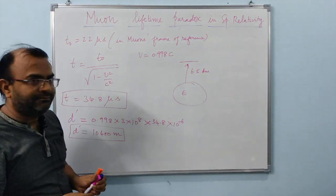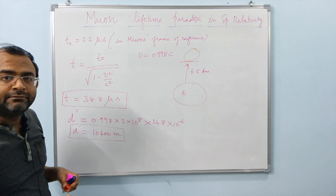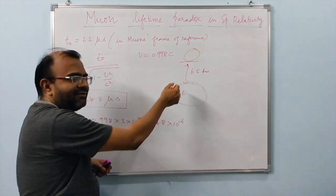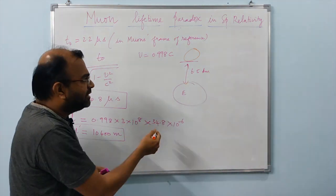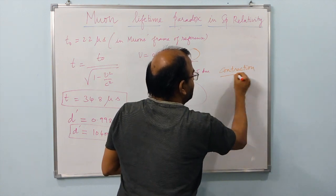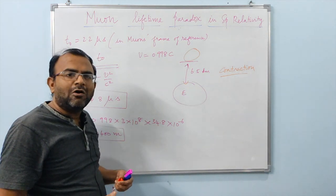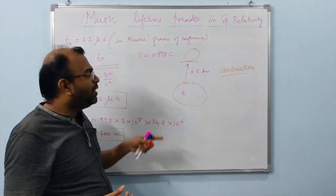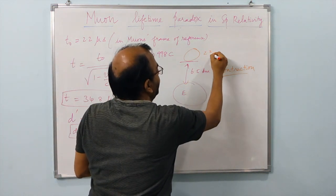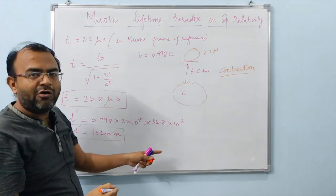There is another way to see this problem. If you were in the muon's frame of reference traveling with the muon, then the distance of six and a half kilometers to reach Earth would be contracted using the length contraction concept. If the muons see this distance as contracted, then with the available time of 2.2 microseconds they would easily be able to reach Earth's surface.